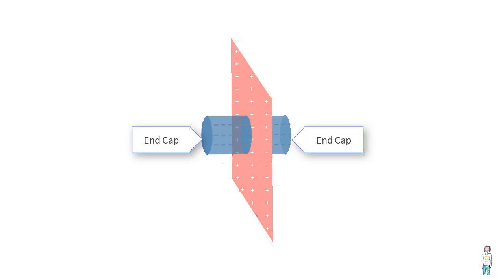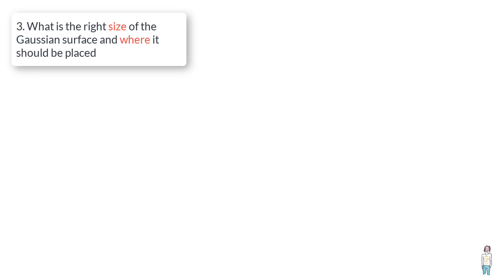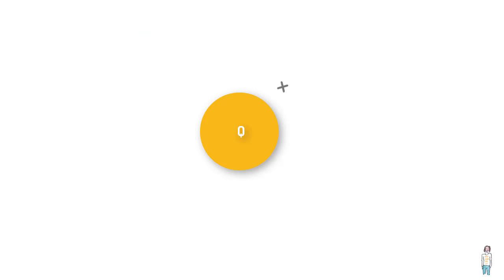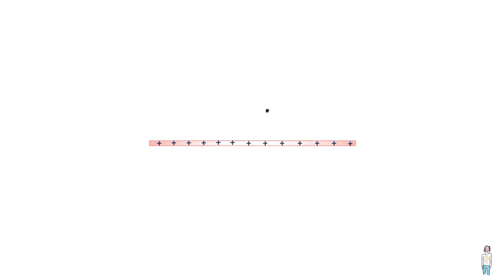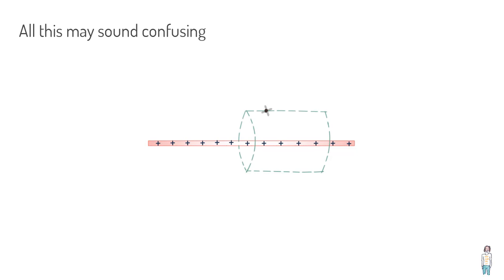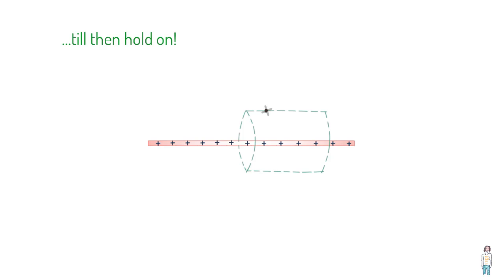Number three: figure out what is the right size of the Gaussian surface you wish to use and where this surface should be placed. If you wish to find the field value at some given point, then the Gaussian surface you choose must include that point. So if you're asked to find the electric field at a point from the cylinder, you would use a Gaussian surface such that the surface passes through that point. As we move ahead and work on some examples, you will get a lot more clarity.